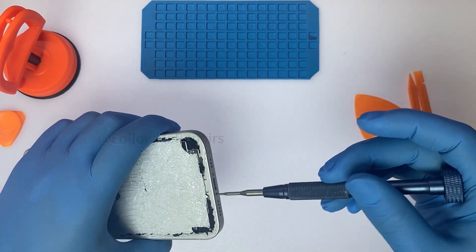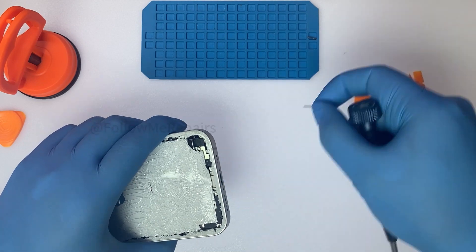After removing the two screws at the bottom of the iPhone, we first remove the broken glass back cover.